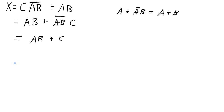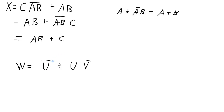Here's a similar example, but with the inversions on different parts of the expression. What if we had w equal to NOT u ORed with u AND NOT v? This is exactly the same form as the previous expression, just using different variables and with the inversion in a different place. NOT u here is analogous to a, and NOT v is analogous to b. So this simplifies to NOT u ORed with NOT v.